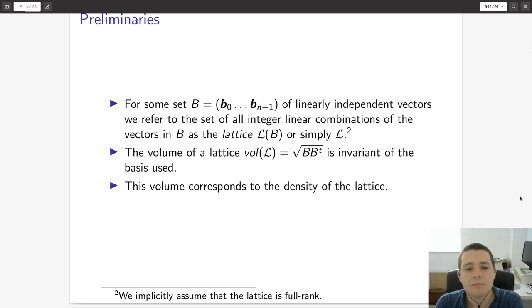So before we begin, we'll go over some preliminaries. If we have some set B comprised of vectors b0 through bN-1 of linearly independent vectors, we refer to the set of all integer linear combinations of the vectors in B as the lattice L of B, or simply L. You may also have heard of B referred to as a basis, but for this talk we'll just refer to it as B.